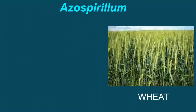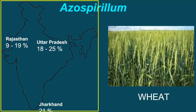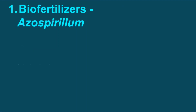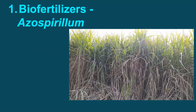Similarly, when applied to wheat crop, yield increased up to 19% in Rajasthan, 25% in Uttar Pradesh, and up to 21% in Jharkhand. Being associative in nature, azospirillum completes its life cycle along with the crops and hence needs to be inoculated every season for every new crop. It should be applied either as seed treatment, seedling dipping, or sometimes through soil treatment, with doses strictly as per recommendations. Azospirillum also colonizes the roots of sugarcane and fixes atmospheric nitrogen to the tune of about 50–75 kg per hectare per year.